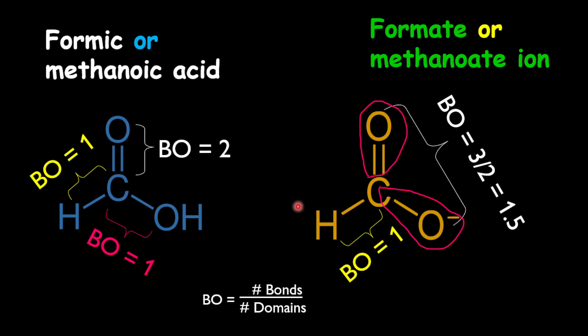What do you notice now? Between both C-O bonds, the bond order is the same — 1.5 for each. Now, when you add the proton or hydrogen at this oxygen, notice what happens to the bond order — it decreases to one. So it becomes weaker. Adding the proton to the oxygen makes this bond much weaker and therefore much longer as well. That's the difference between the two structures when you compare them.